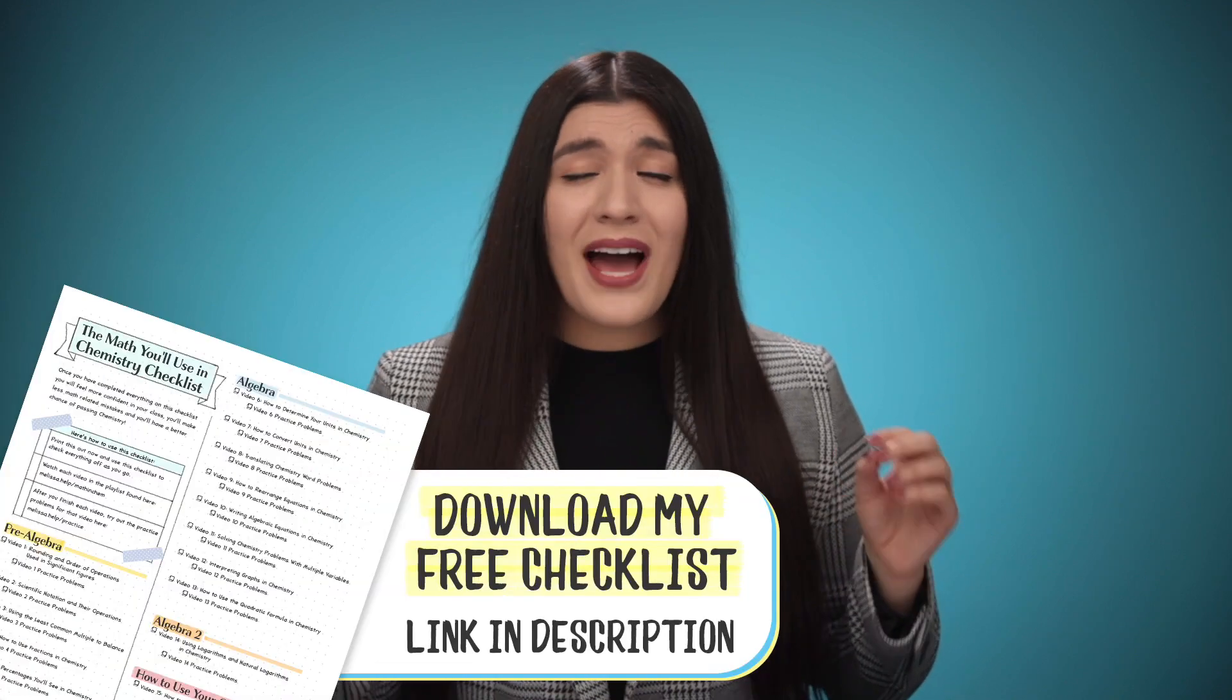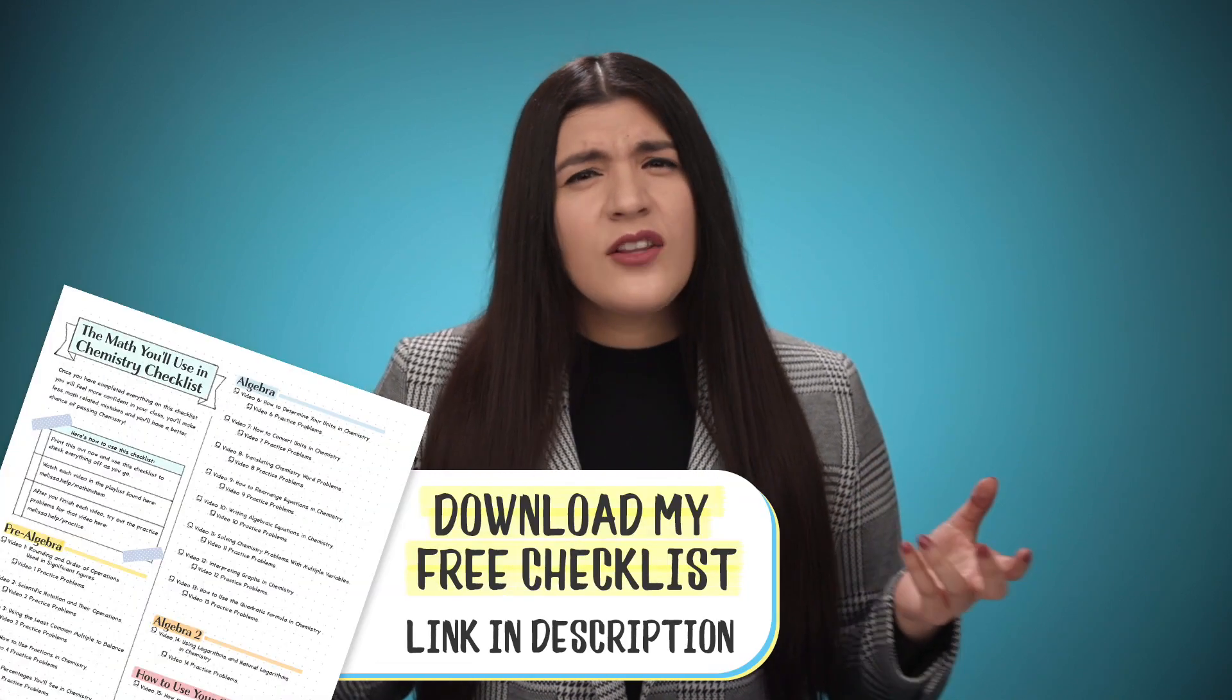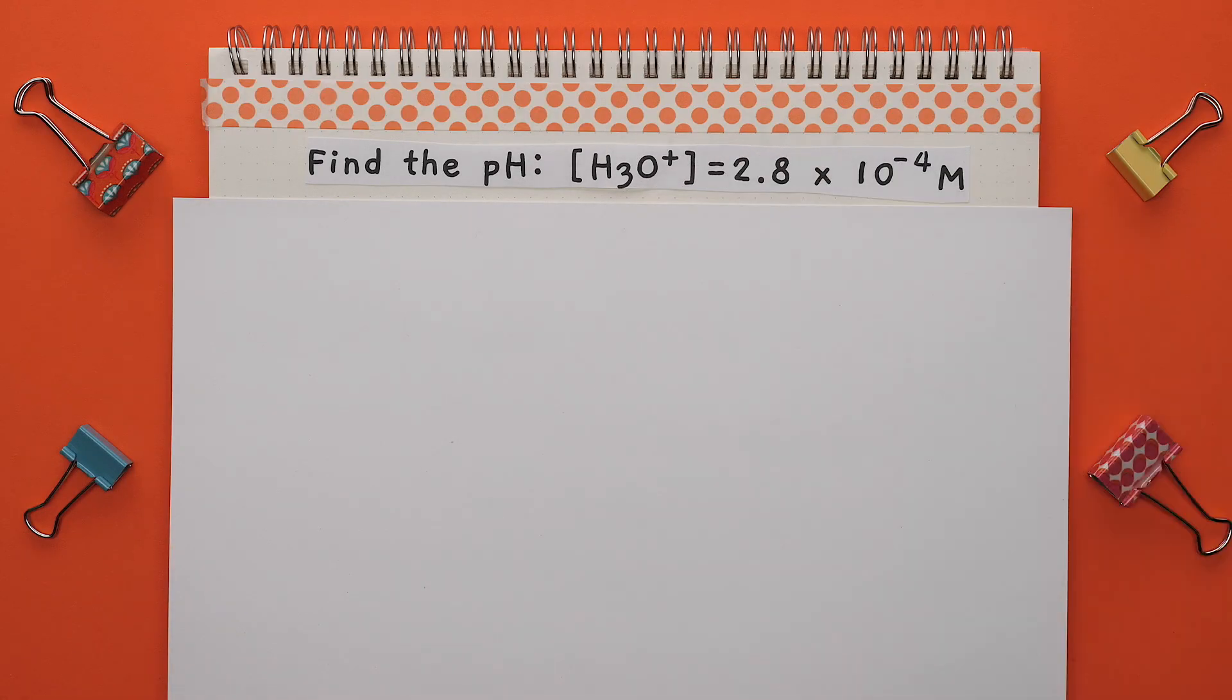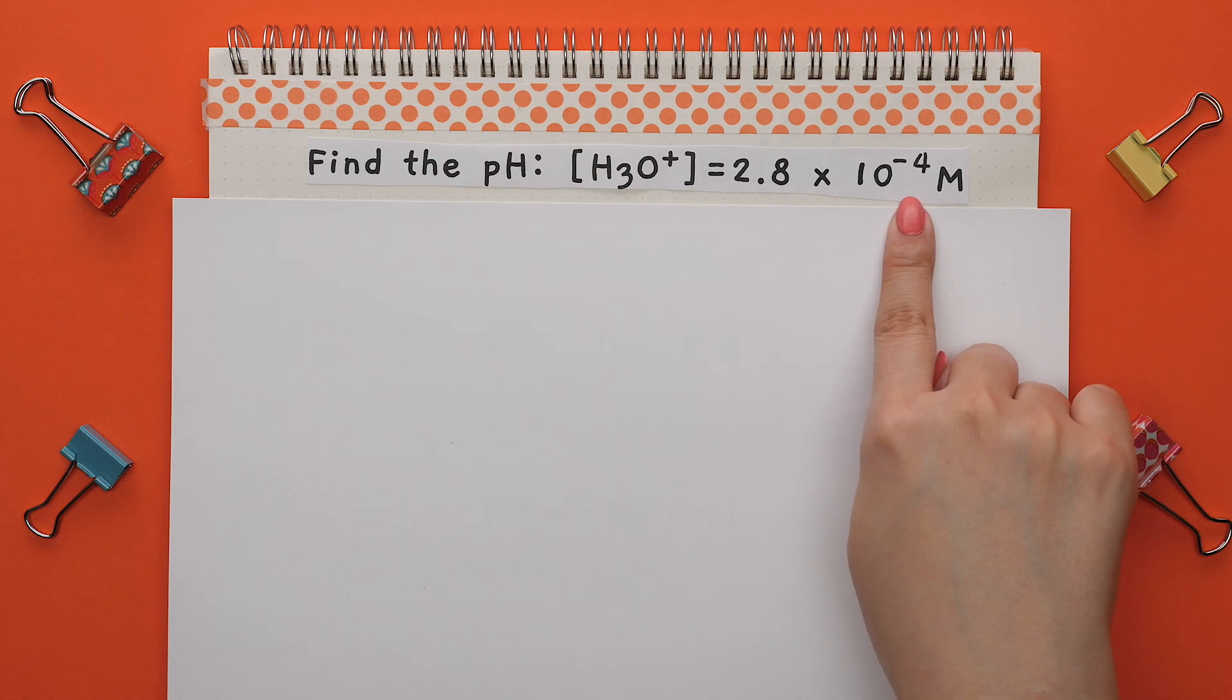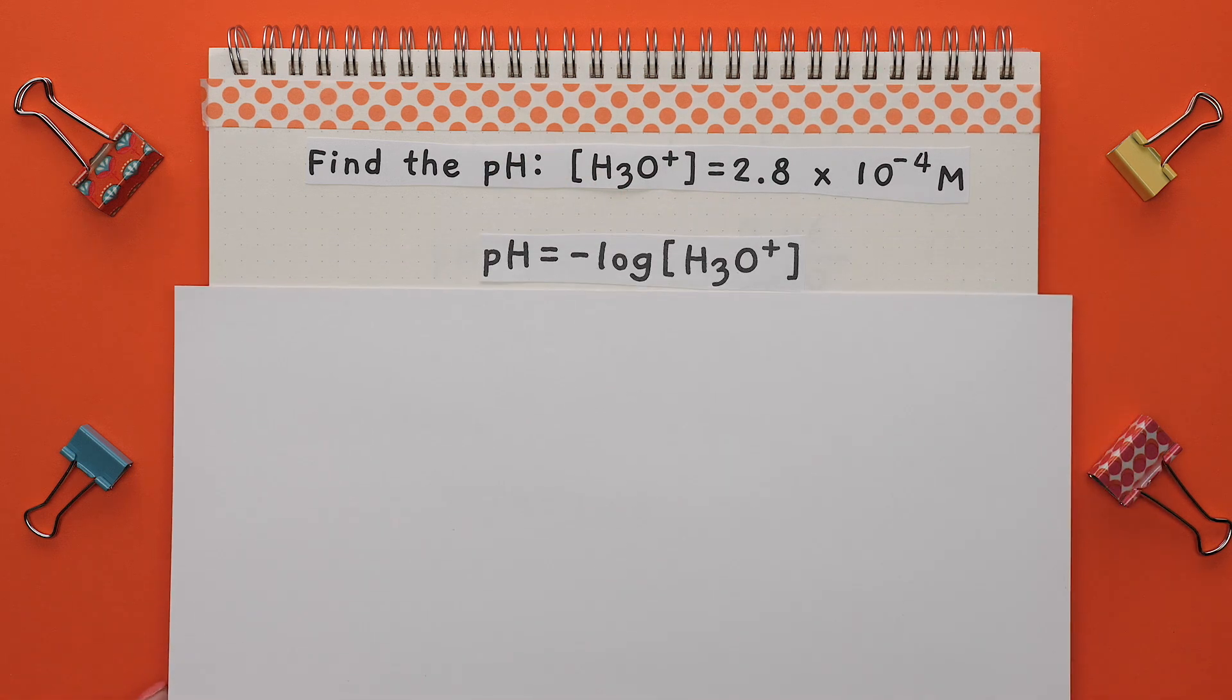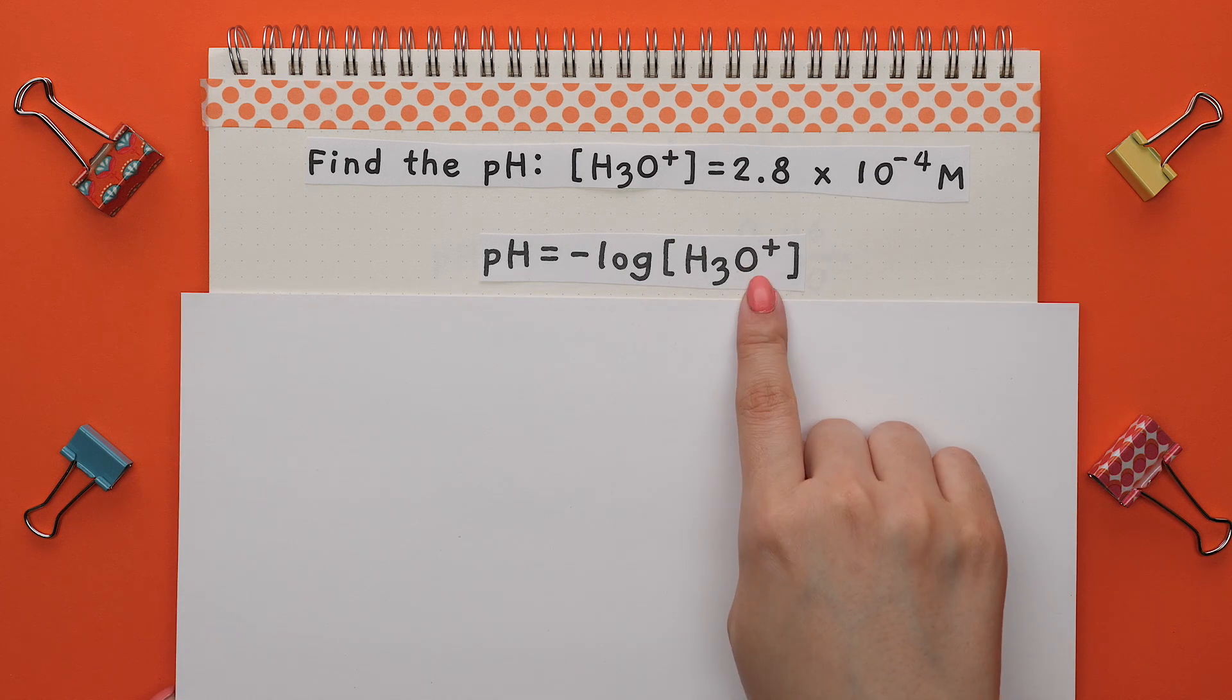You will see this a lot whenever you are talking about acids and bases. Taking the log of a value is very simple since you have to use your calculator. Let's say we were asked to find the pH of this acid concentration, where the formula for pH is equal to negative log of the acid concentration.